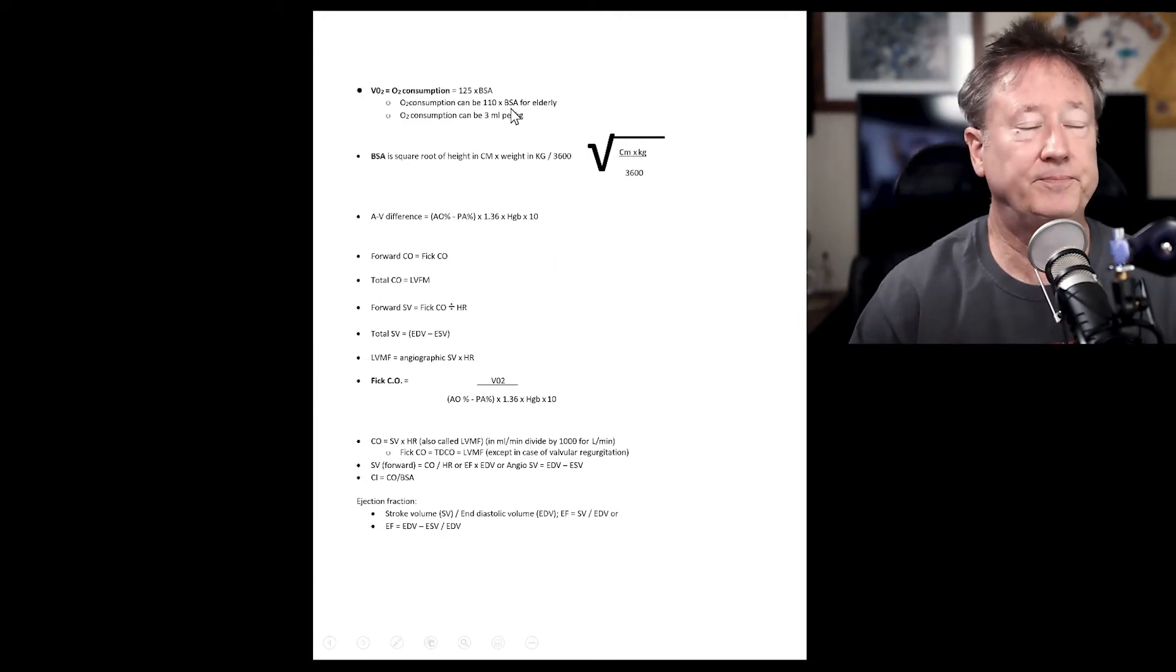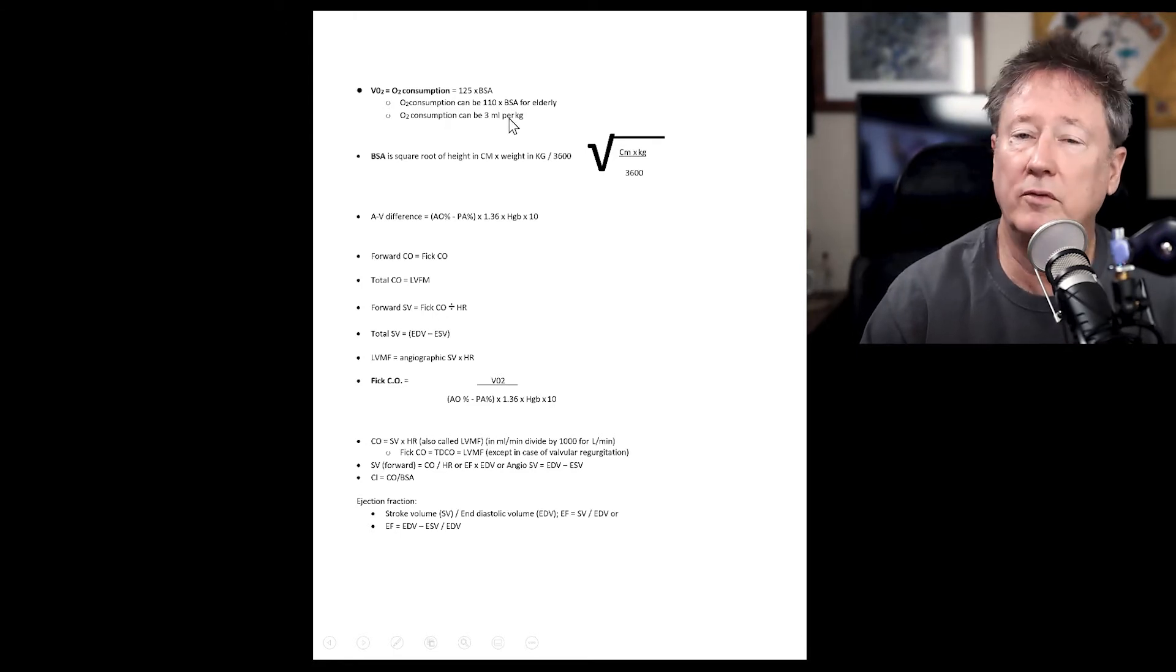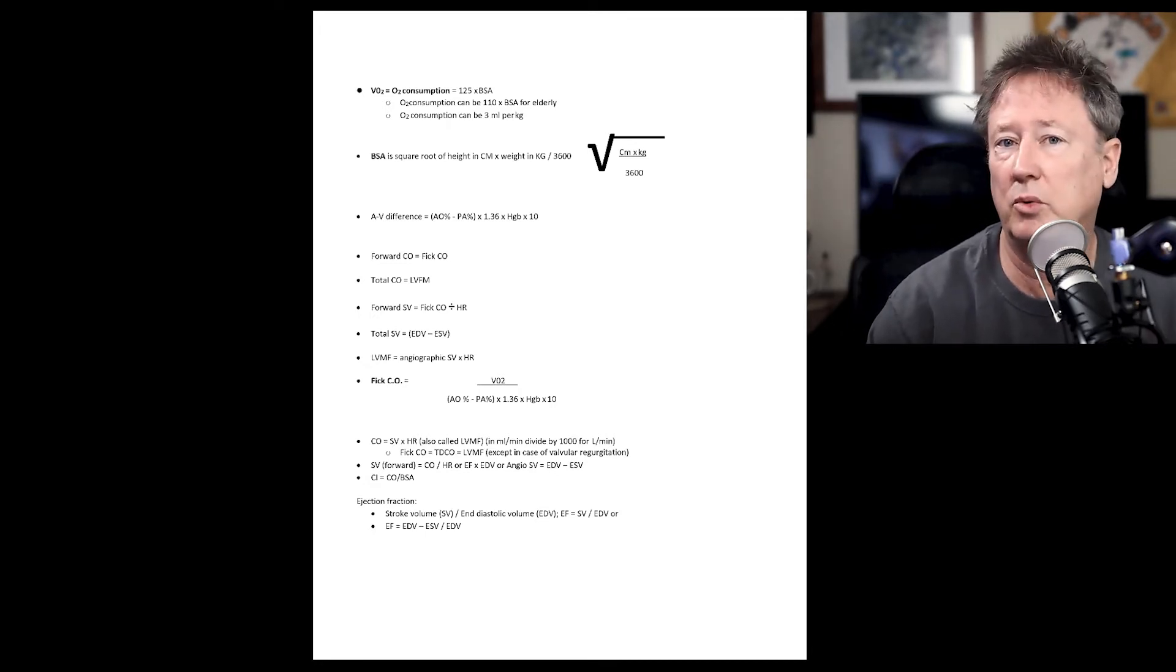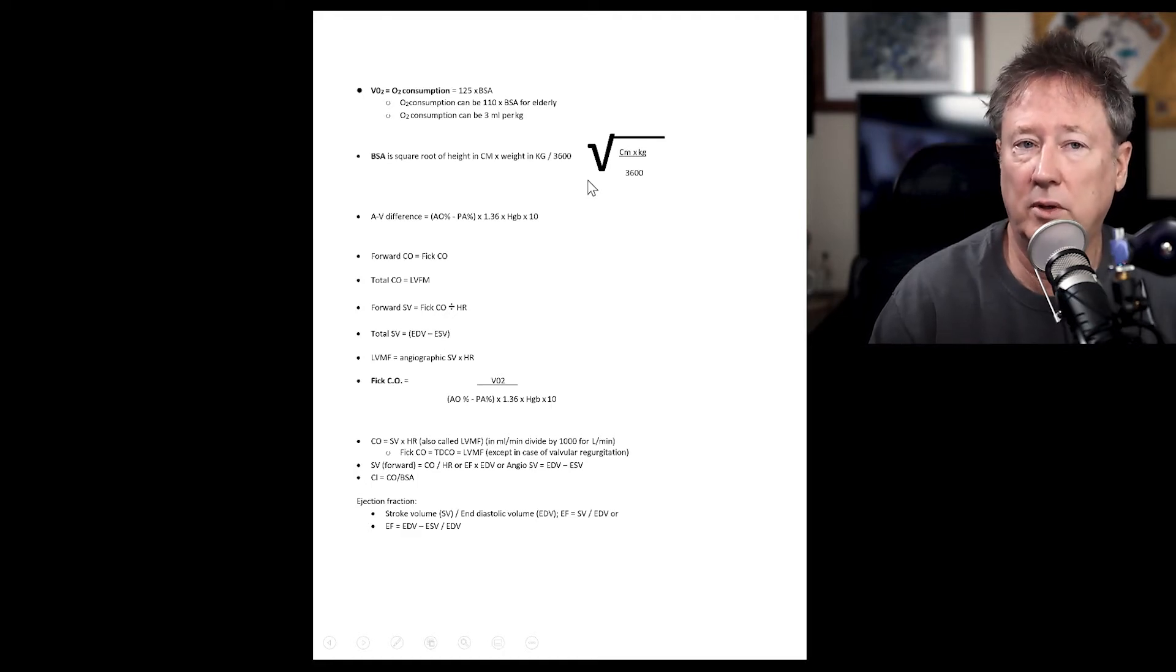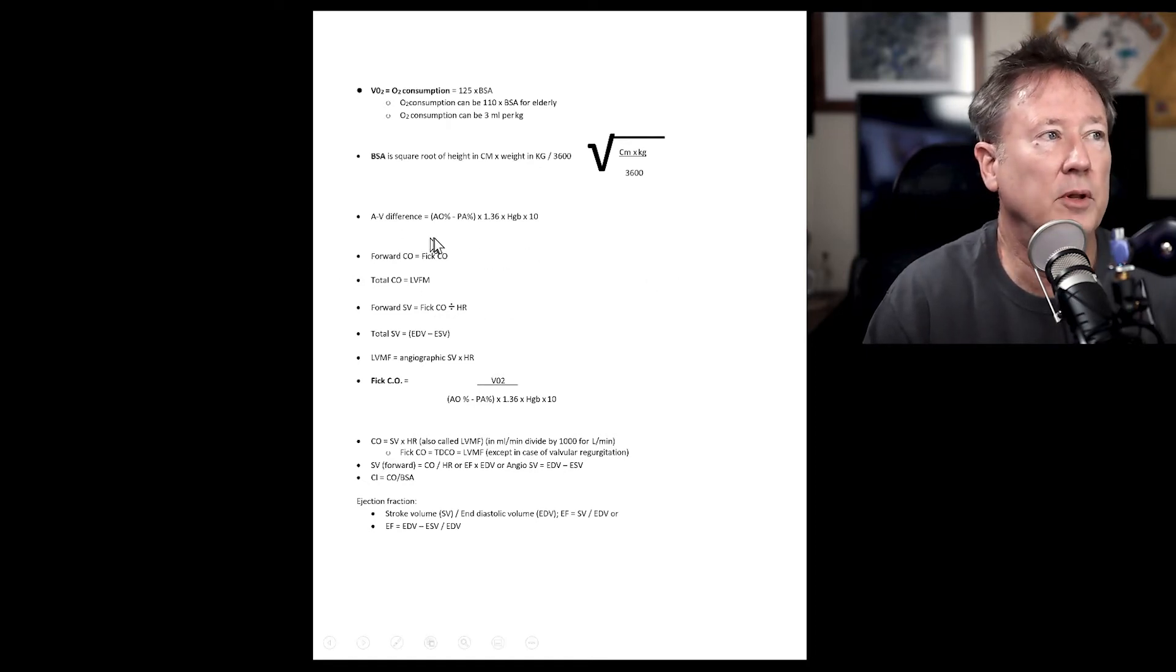And then O2 consumption, there's a number of different formulas for O2 consumption. These are three of the common ones: 125 times BSA, 110 times the BSA for elderly people. Then that begs the question, what's elderly? Or your O2 consumption, three milliliters times the patient's weight in kilograms. If you have to calculate BSA, you could look it up on a table and get close. A more accurate way is to take the height in centimeters times the weight in kilograms divided by 3,600 and take the square root of that number. And it gives you the patient's BSA. Formula for AV difference, and then talking about Fick cardiac output.